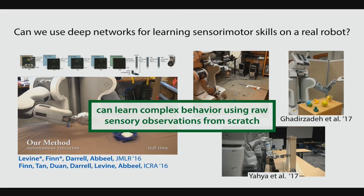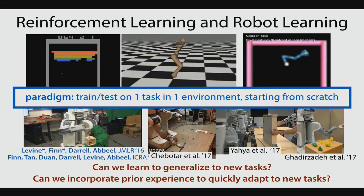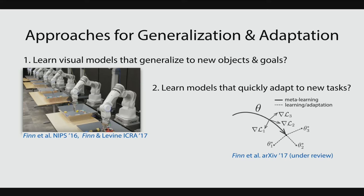What's missing is generalization. If you look at all these methods, there's a paradigm of training and testing in a single environment on one task starting from scratch. How can we learn to generalize to new tasks we haven't seen before, and also incorporate prior experience in order to quickly adapt? These are the questions I'm going to be focusing on: can we learn visual models that generalize to new objects and new goals, and can we learn models that quickly adapt to new tasks? Then I'll talk about some future work.